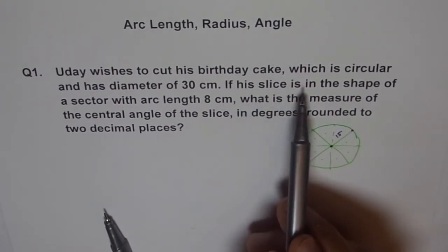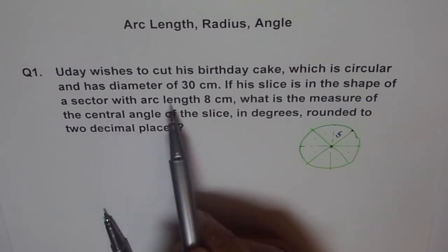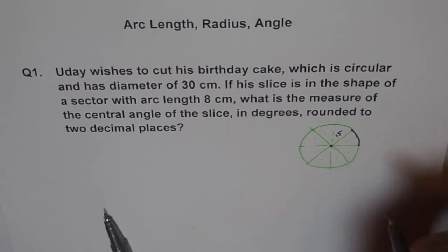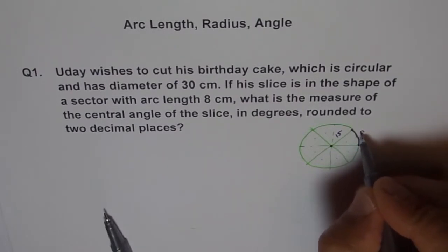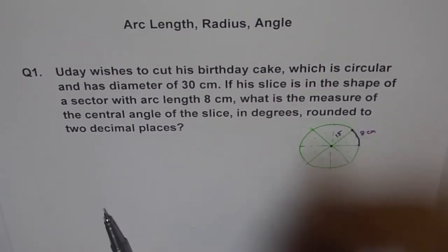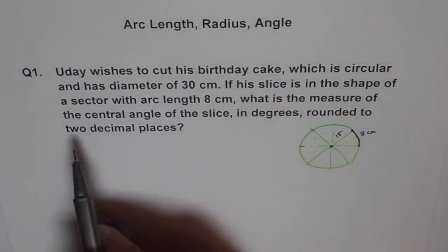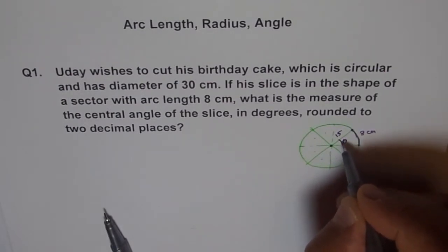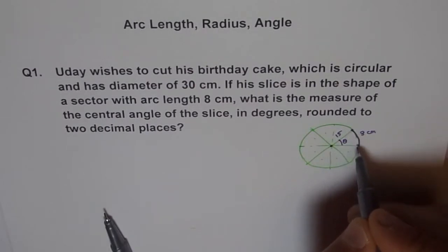If a slice is 15 cm. If a slice is in the shape of a sector with arc length 8 cm. Arc length is this length. Arc length. This arc length is 8 cm. What is the measure of the central angle? Central angle is the angle subtended by the arc. So this angle theta. This angle from this arc. And that is 1 sector we are talking about.